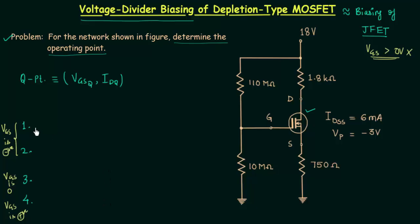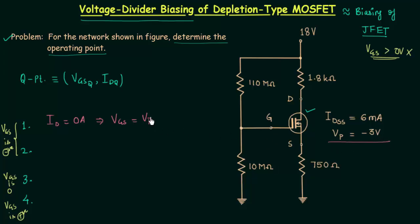Let's start with the first point. We get the first point when drain current ID is equal to 0A. Putting ID equal to 0A in Shockley's equation gives VGS equal to VP, and VP is equal to -3V. So VGS is equal to -3V. These are the two coordinates of the first point: (VGS = -3V, ID = 0A).